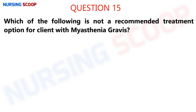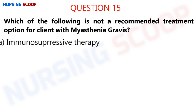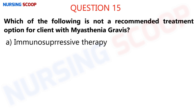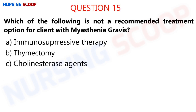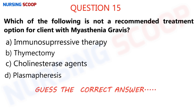Moving to the last question of today's video: which of the following is NOT a recommended treatment option for a client with myasthenia gravis? Option A is immunosuppressive therapy, option B is thymectomy, option C is cholinesterase agents, and option D is plasmapheresis.